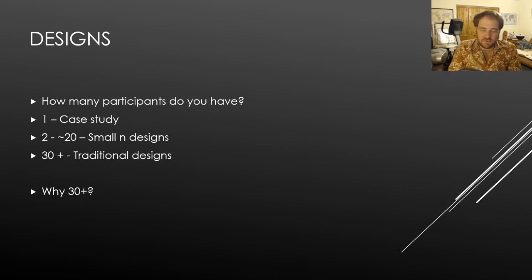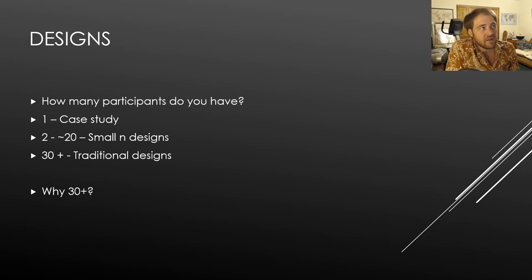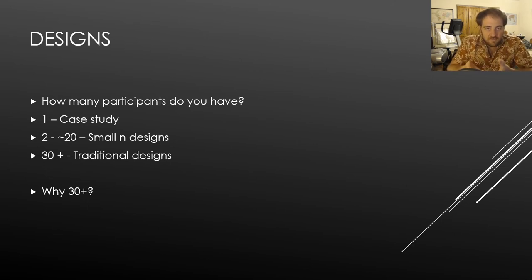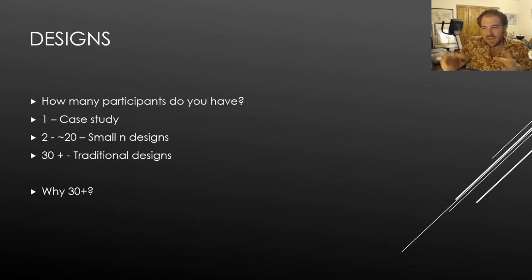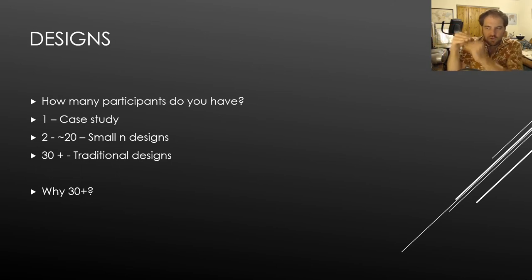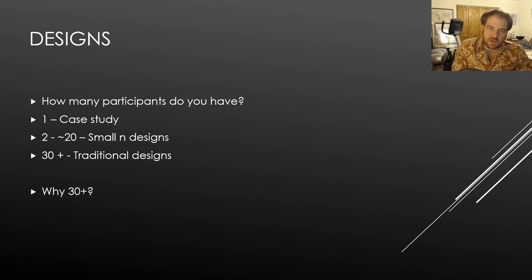Why thirty? At this point, the standard error of a group starts to look like the population. What that means is you can make meaningful inferences from a group of thirty or more to what the broader population is like. The explanatory power you gain by increasing from thirty to one hundred is meaningful, but going from one hundred to two hundred gives diminishing returns — you're not gaining nearly as much.